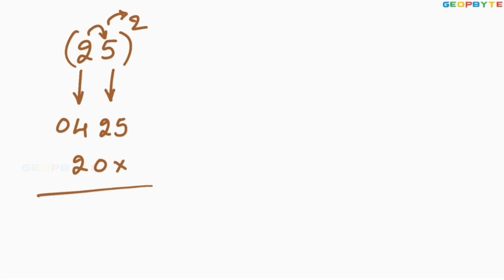Add these values: 5, 2 plus 0 is 2, and 4 plus 2 equals 6. Therefore, 25 whole square equals 625.